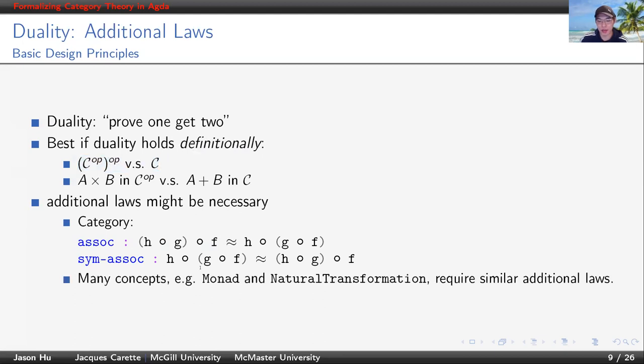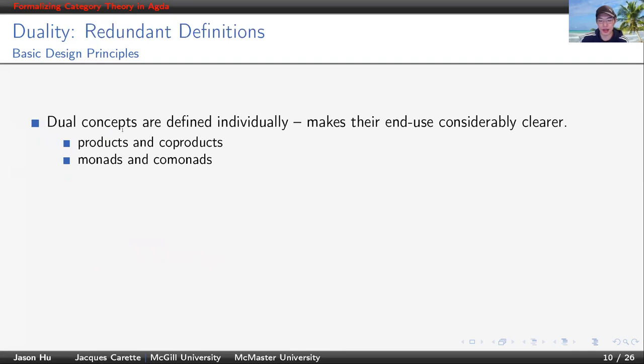Other than category, many other concepts like monad and natural transformation require similar additional laws. Since this idea is very helpful, we want to push it to all concepts. To ensure everything is duality-friendly, we introduce some redundancy to the definitions by requiring dual concepts to be defined individually. For example, products and coproducts are separate definitions, and monads and comonads are also separate definitions.